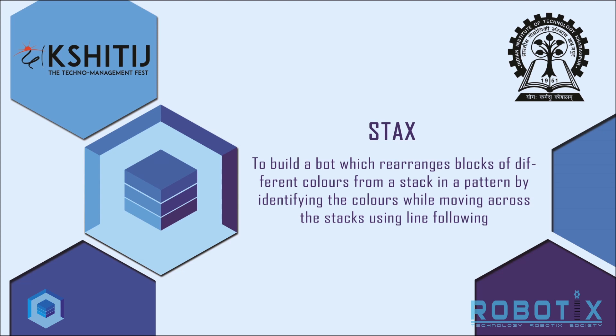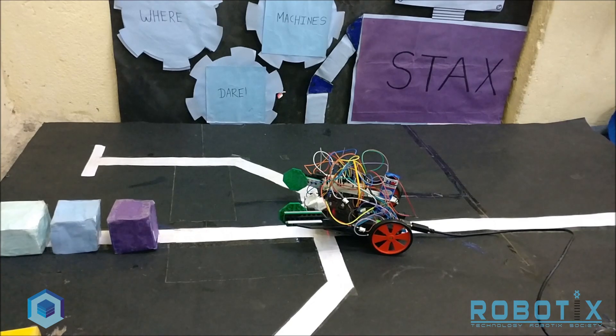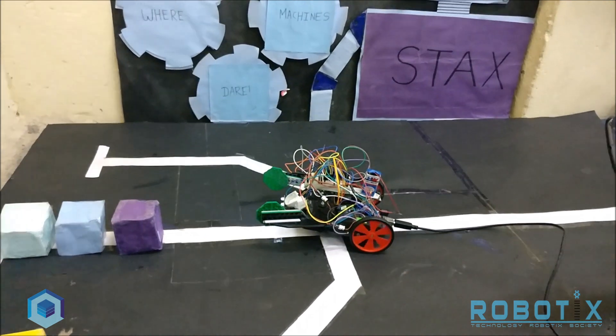The problem statement for this event is to build a robot which rearranges blocks of different colors from a stack in a pattern by identifying the colors while moving across the stacks using a line following mechanism.